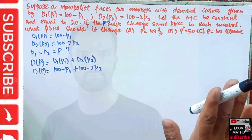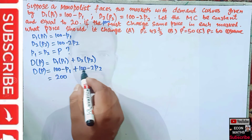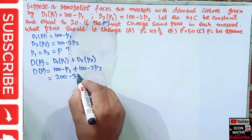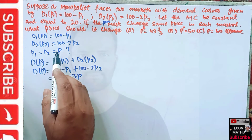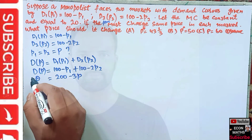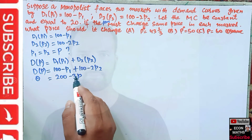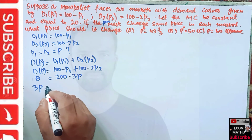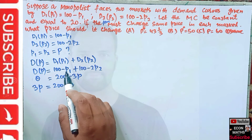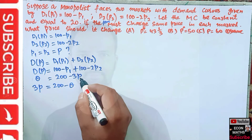Adding these together gives 200 - p1 - 2p2. Since the monopolist is not discriminating, p1 = p2 = p, so we can substitute p for both, giving us Q = 200 - 3p. We can write this as a function of price.